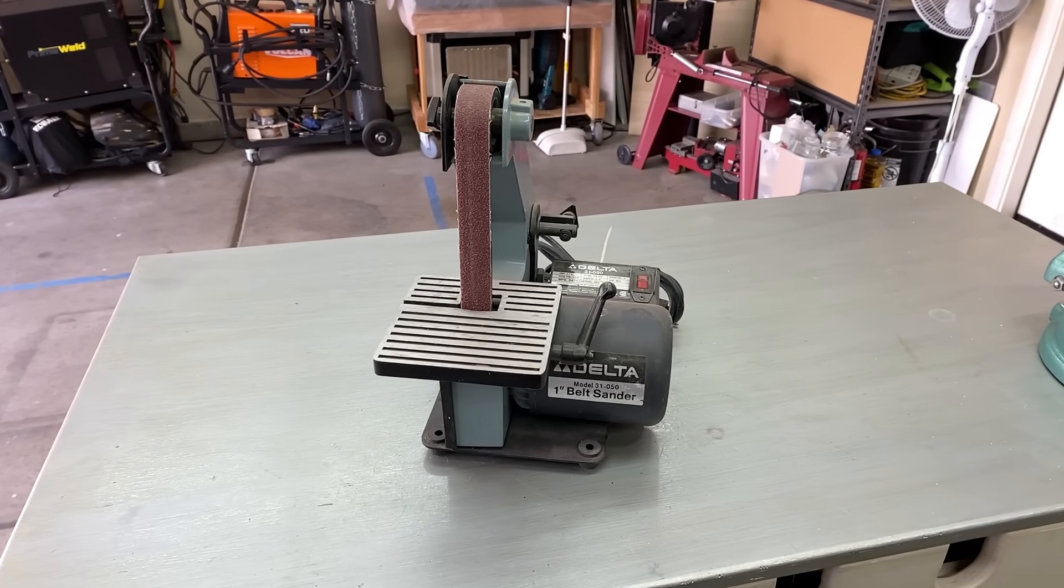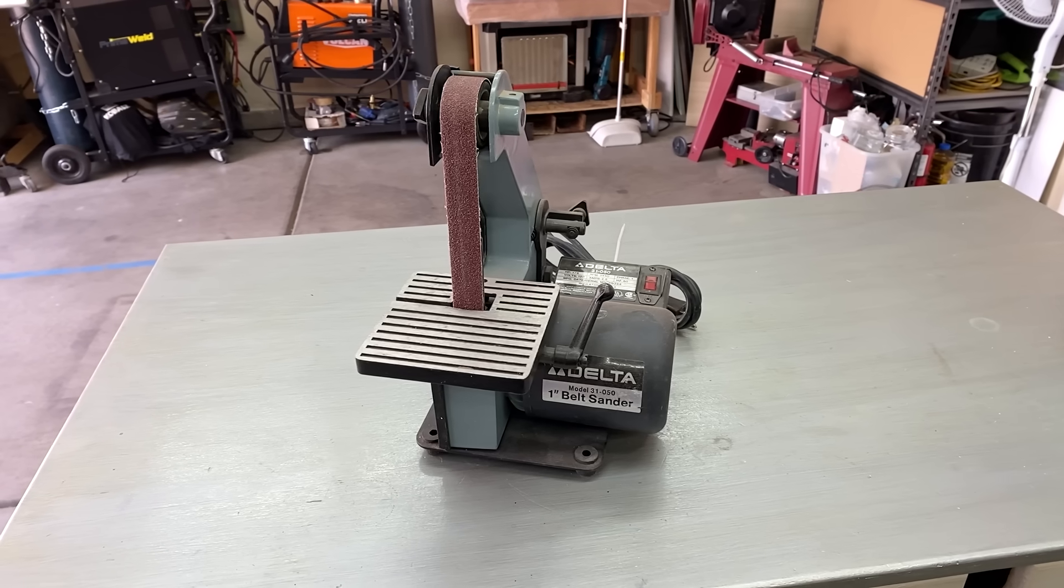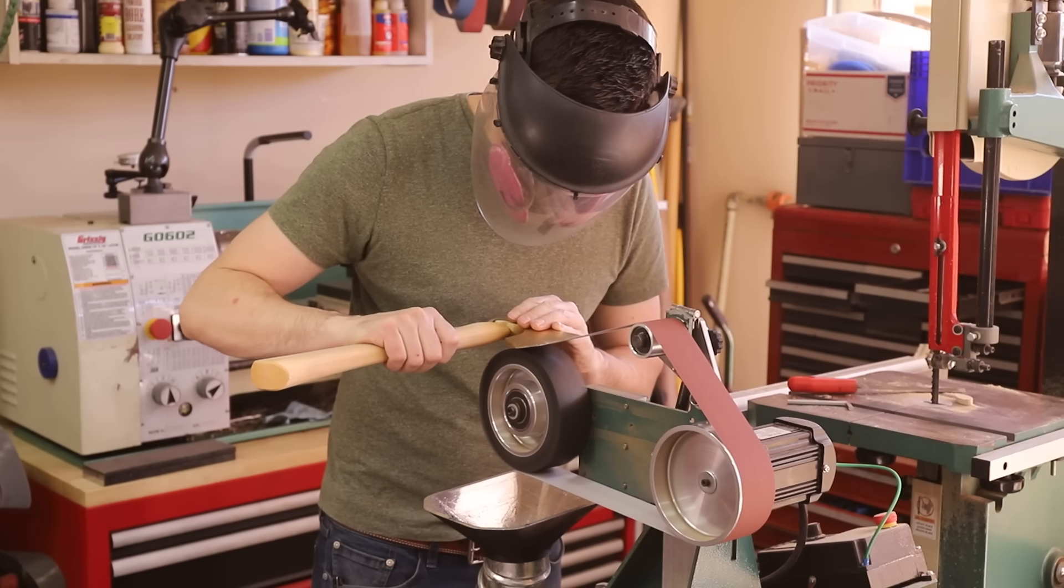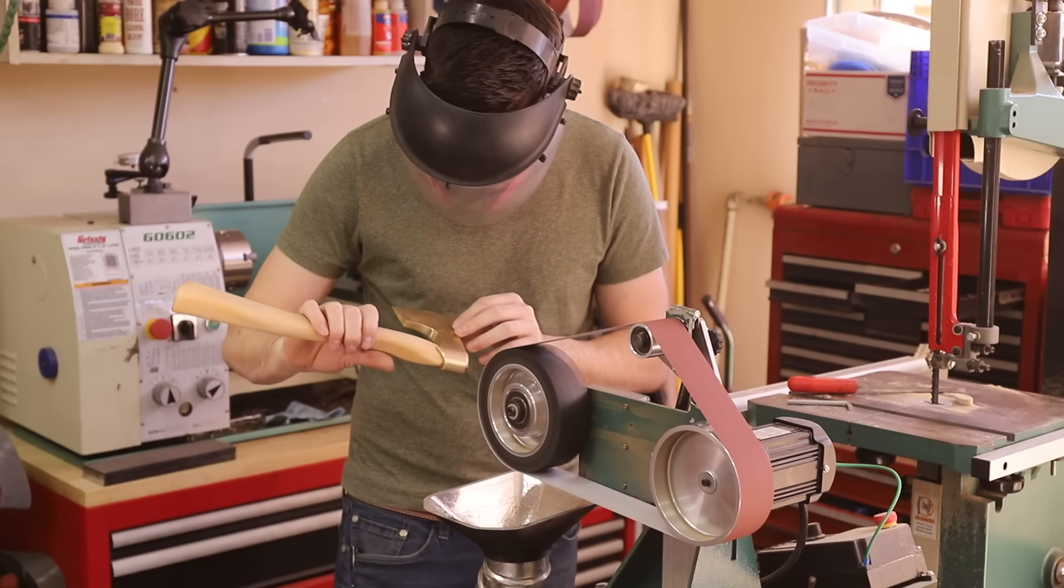I have a fairly small home shop that takes up about half a garage, so space is precious to me. I bought this Grizzly grinder because I was looking for a grinder that fits somewhere between these 1x30 inch belt sanders that you see all over the place and the large 2x72 inch belt grinders.